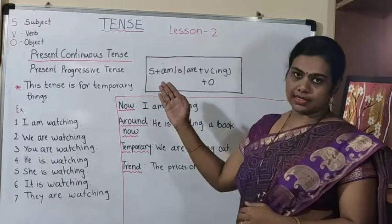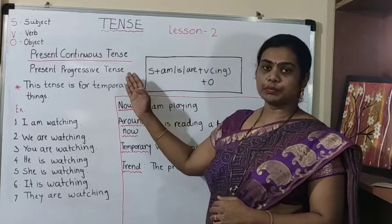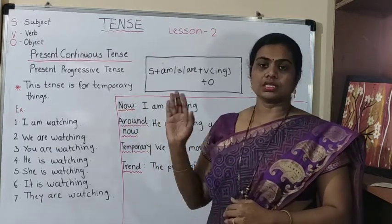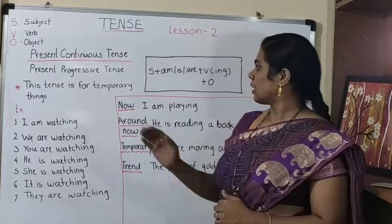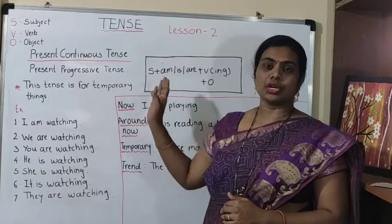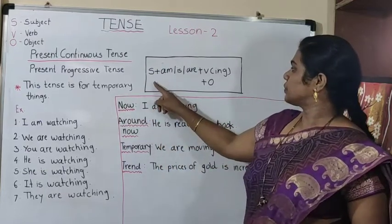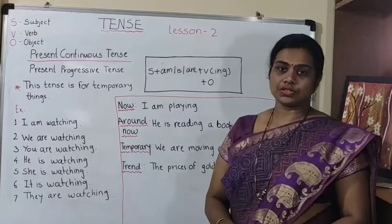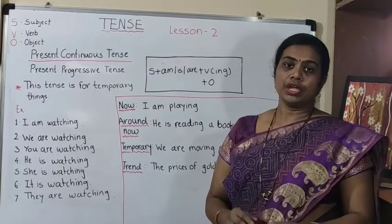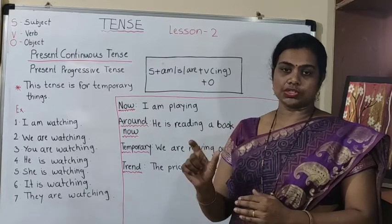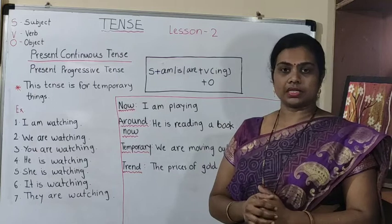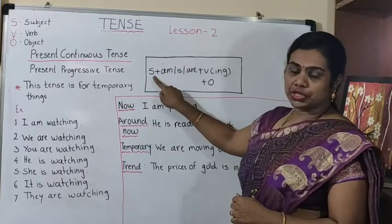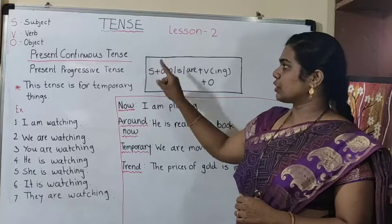The present continuous tense, or present progressive tense, is basically used for temporary things. I have one structure for this tense: Subject + am/is/are + verb-ing + object. This structure is for present continuous tense. If you place words into this structure, you will get a proper sentence of present continuous tense.